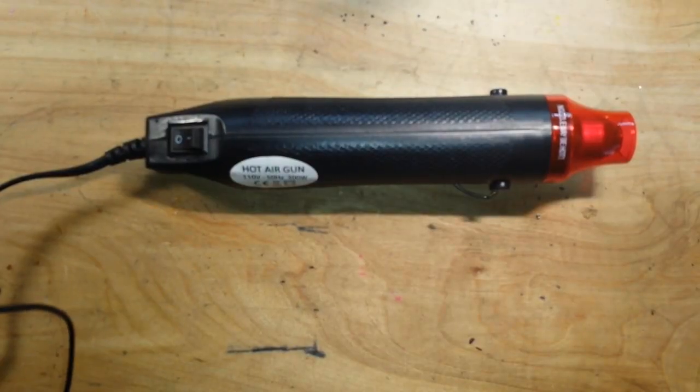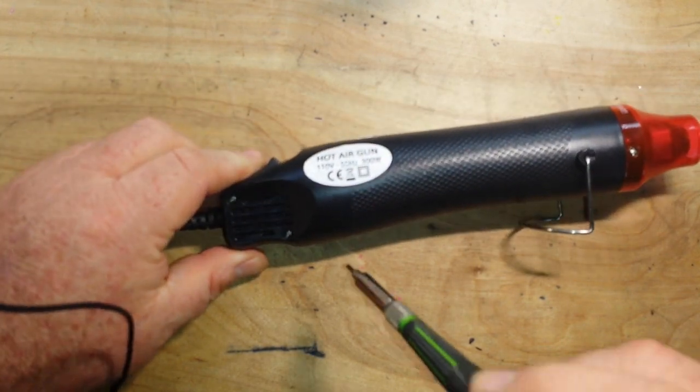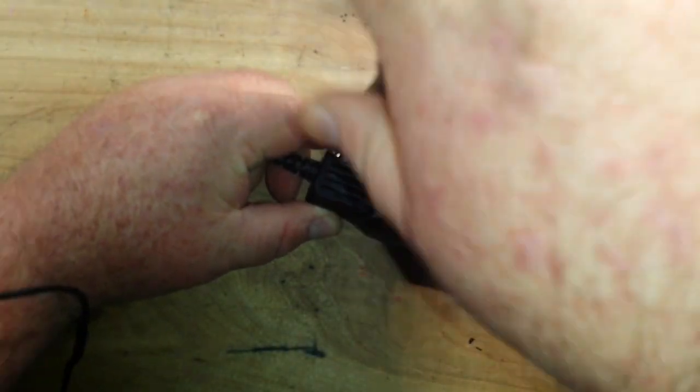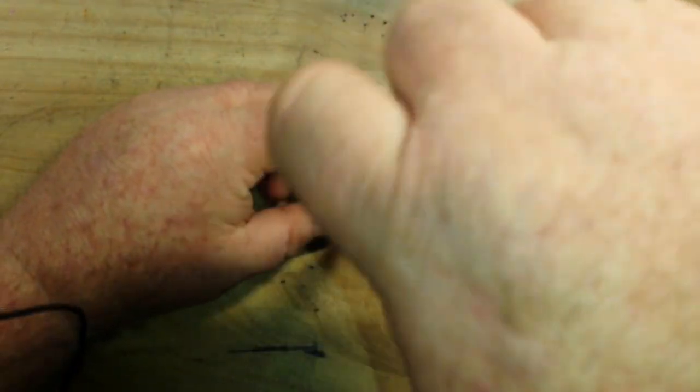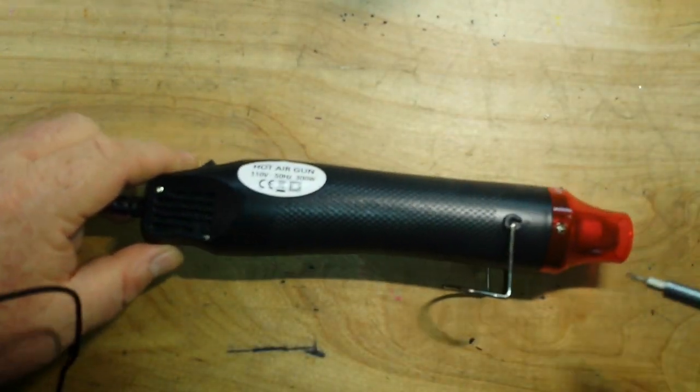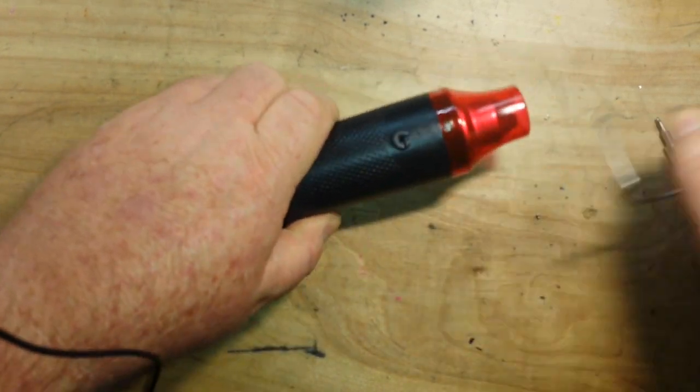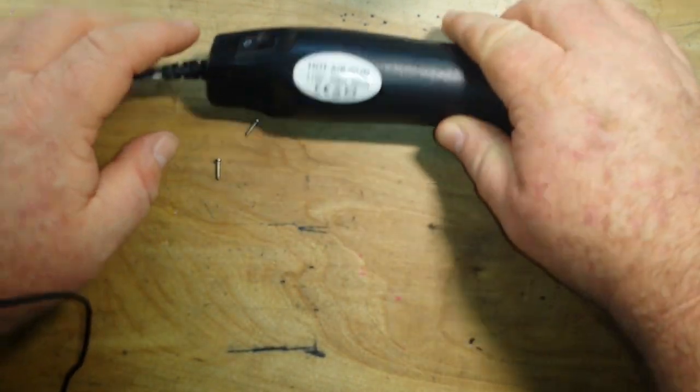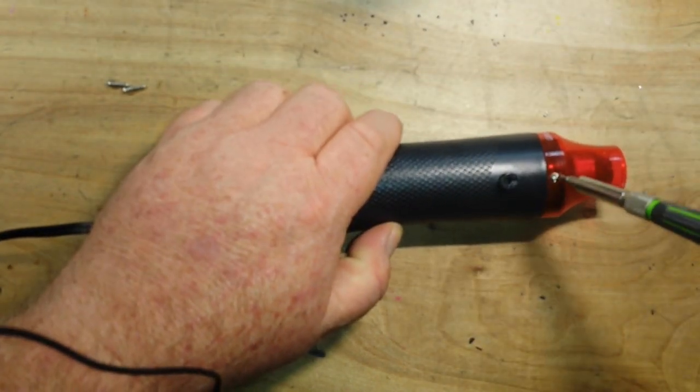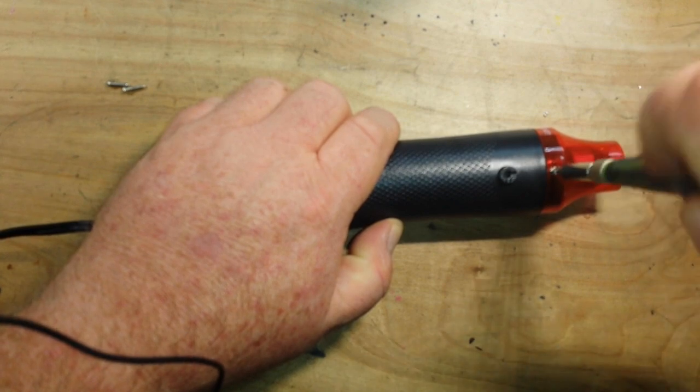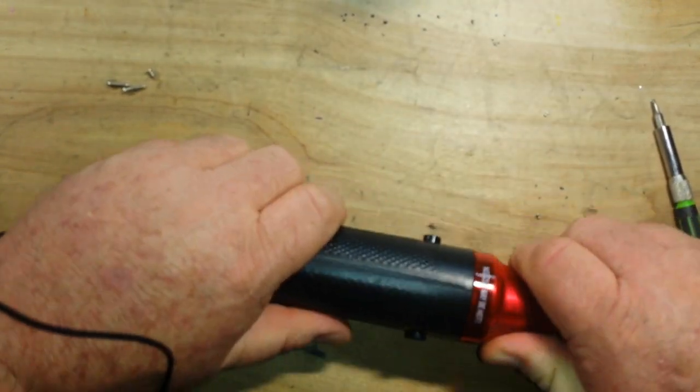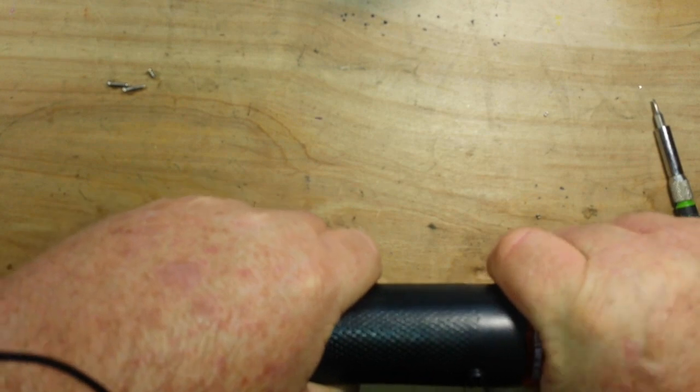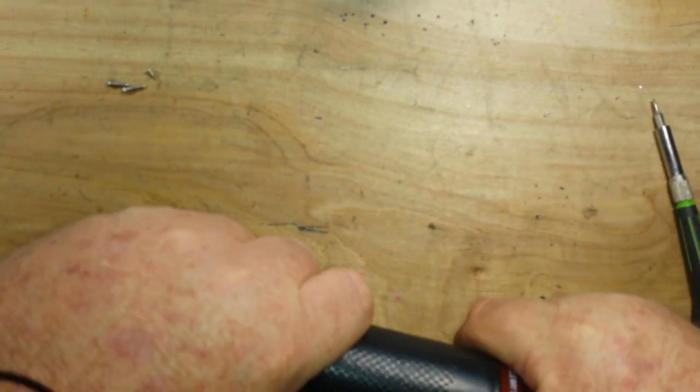Alrighty then, with screwdriver in hand our intrepid Paul takes apart the newly purchased item, because we got to know what's inside, right? I mean here's a heating element, a fan, probably a rectifier. What else are we expecting to see? Some sort of temperature control maybe, a PTC, or maybe a thermocouple with some sort of feedback, an air amplifier.